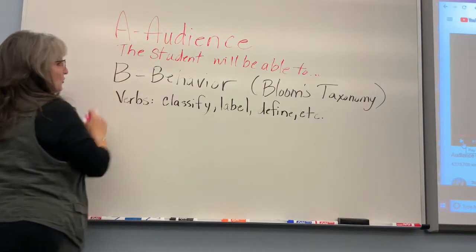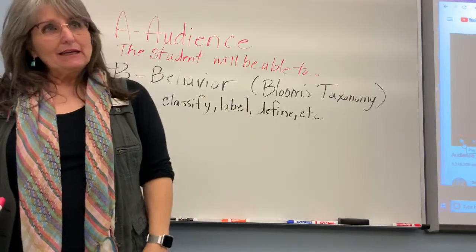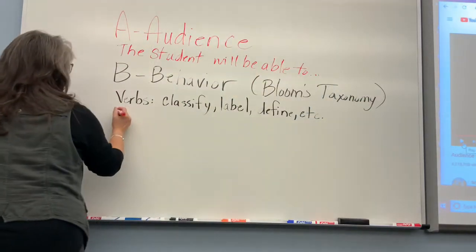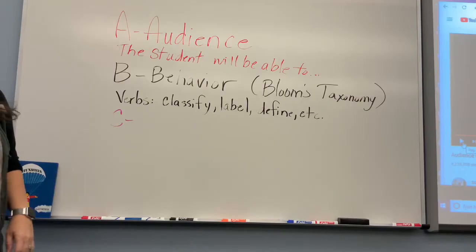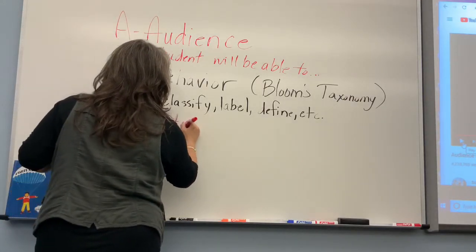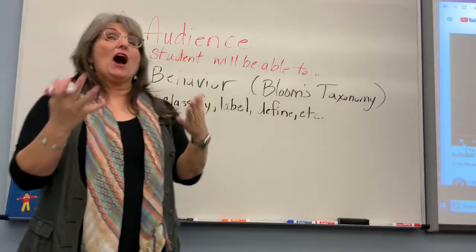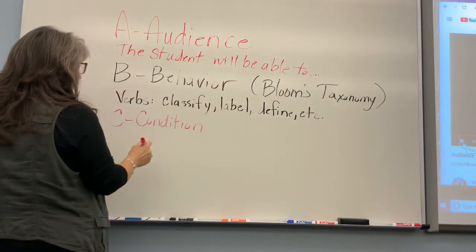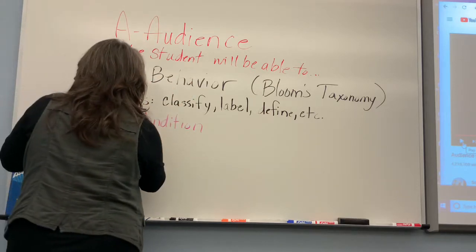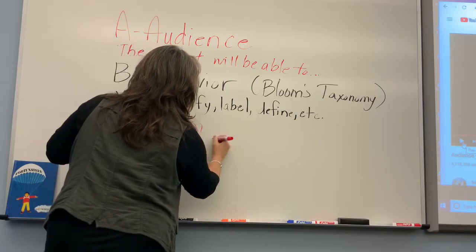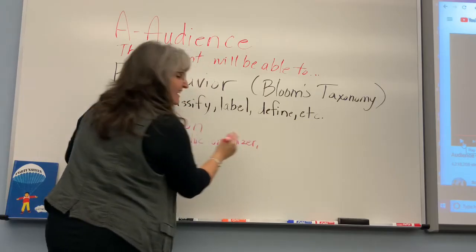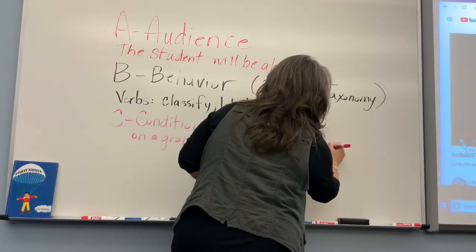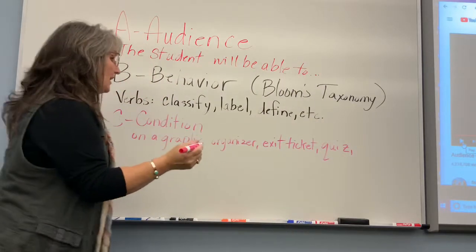After B comes C, and C stands for condition. The condition is going to flesh out that verb — it tells us how and what. So we have the student will be able to, then our behavior, then the condition that tells us how this is going to happen. Maybe it's going to be on a graphic organizer, on an exit ticket, on a quiz, or on a diagram.